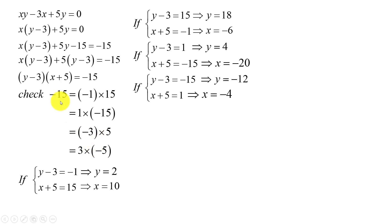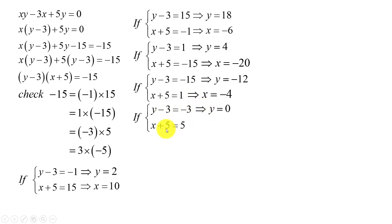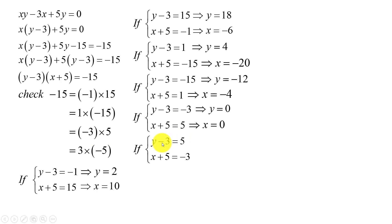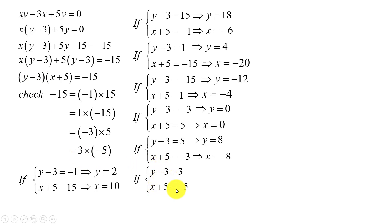If y minus 3 equals negative 3 and h plus 5 equals 5, moving minus 3 to the right-hand side gives y equals 0, and moving 5 to the right-hand side gives h equals 0. If y minus 3 equals 5 and h plus 5 equals negative 3, moving 3 to the right-hand side gives y equals 8, and h equals negative 8. If y minus 3 equals 3 and h plus 5 equals negative 5, we get y equals 6 and h equals negative 10.